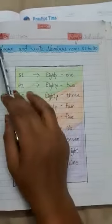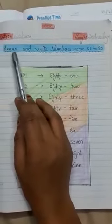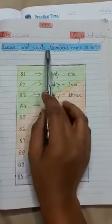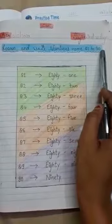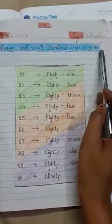Today we are going to learn and write numbers named 81 to 90.